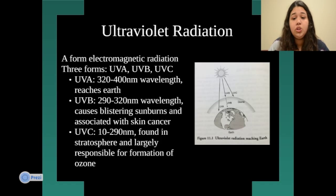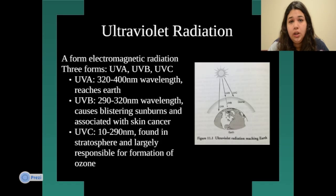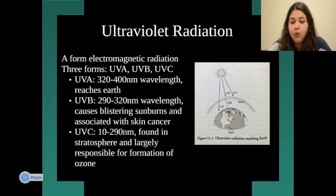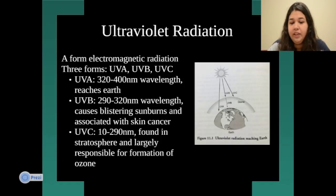Ultraviolet radiation is a part of the ozone layer. The ozone's purpose is to protect from too much UV radiation hitting the earth. UV is short for ultraviolet and it's a form of electromagnetic radiation. There are three forms: UVA, UVB, and UVC. UVA is 320 to 400 nanometers of wavelength and it reaches the earth.